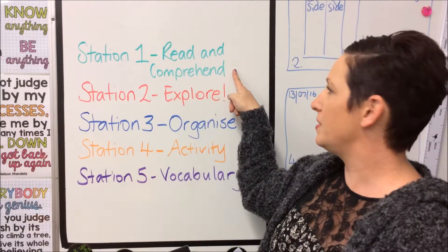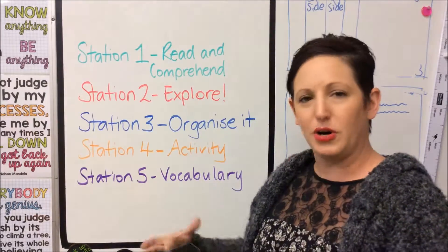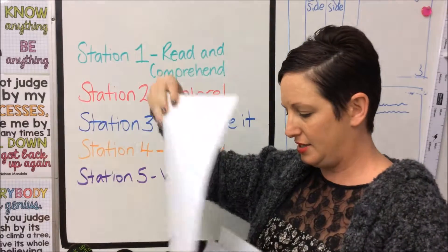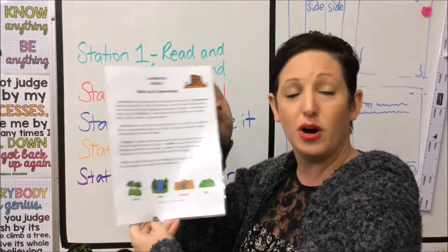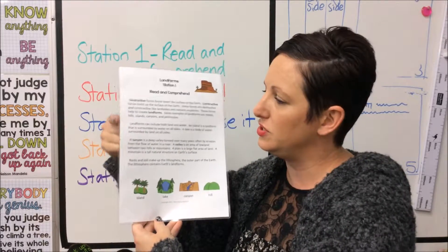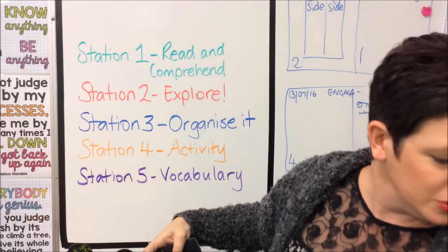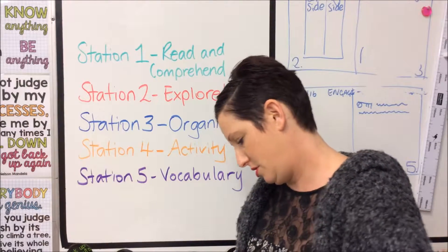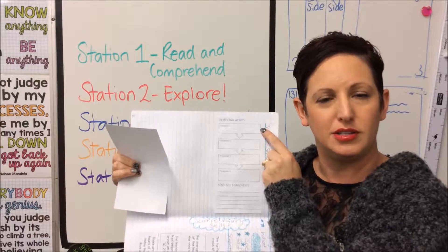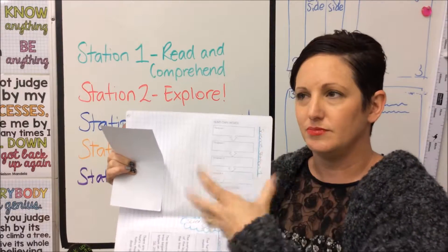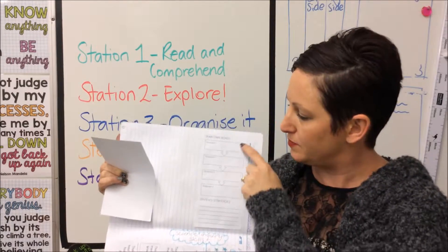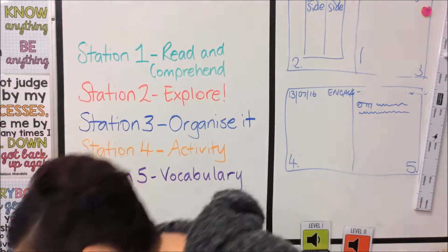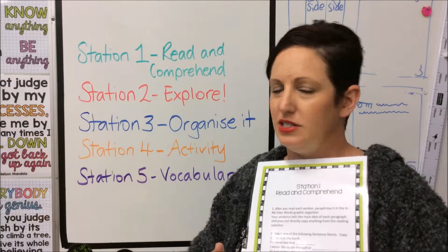For station one it's about reading and comprehending. Within the box there will be an information sheet on what you need to do. You'll find a reading passage in the box — there will be four short paragraphs to read. Following that, in your book you'll be given a recording sheet to summarize each paragraph in your own words — just a few words to recap what each paragraph was about. Then you'll write a sentence based on a sentence stem, which you'll find on your information page.